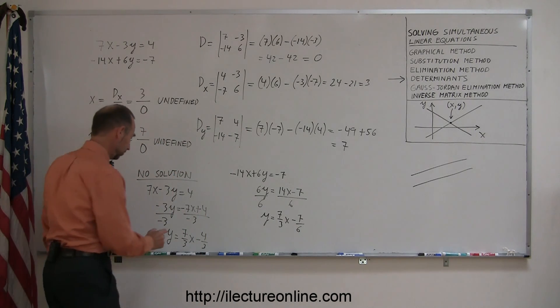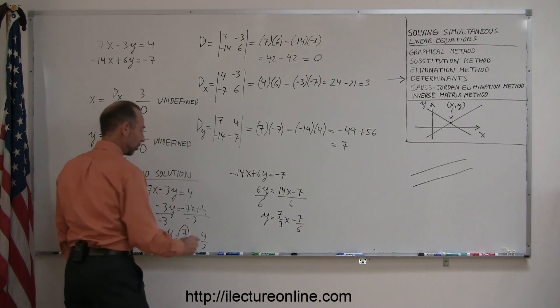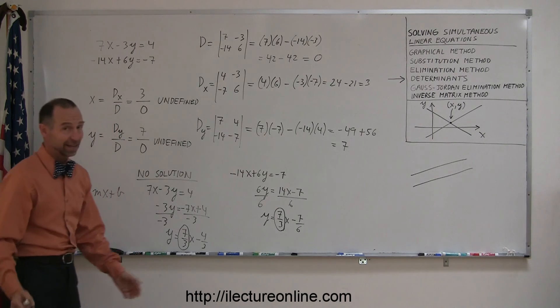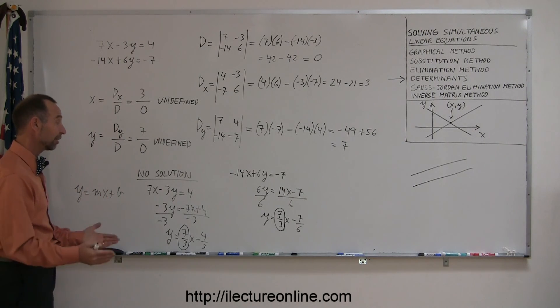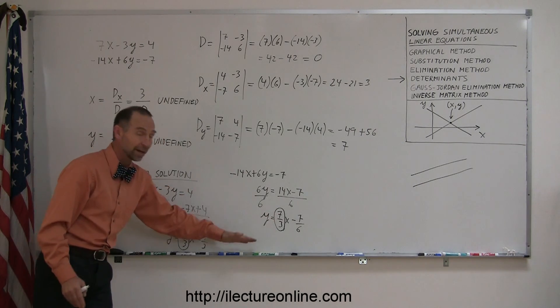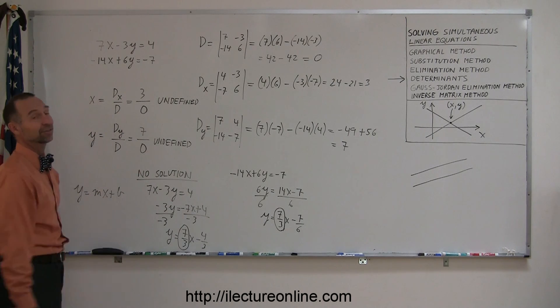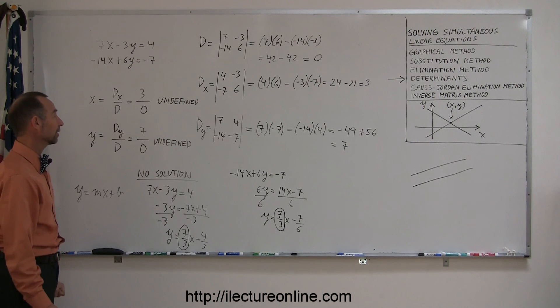And notice, there's the slope of the first line, there's the slope of the second line, and they're exactly the same, which means those two lines are parallel. They simply cross the y-axis in different places, but they have the exact same slope, so they cannot have a solution. We have a situation where these two lines are parallel.